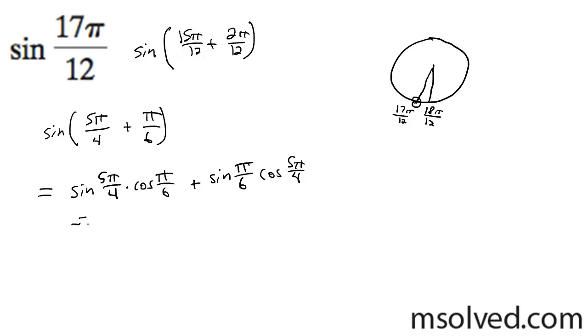The sine of 5π over 4 is negative √2 over 2 times the cosine of π over 6, which is √3 over 2, plus the sine of π over 6 is 1 half. The cosine of 5π over 4 is negative √2 over 2.